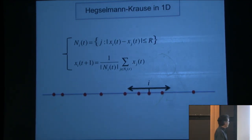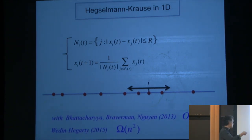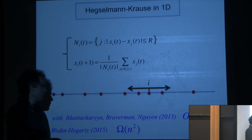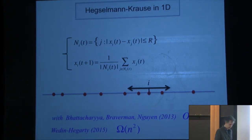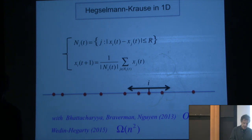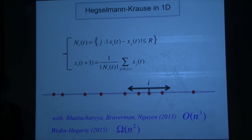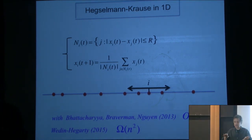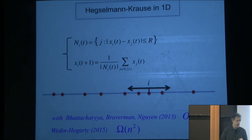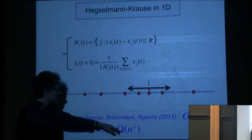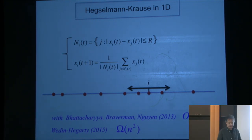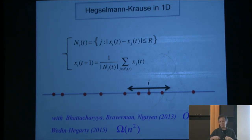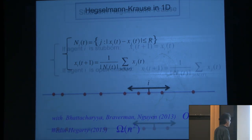This goes on forever. With Mark and our other Princeton collaborators, we proved an upper bound of N cubed on the time it takes for the system to actually freeze completely — not just reach a fixed point, but stop completely. These other people showed a lower bound of N squared. In practice it's extremely fast in simulations, but there are pathological cases where things are more complicated.